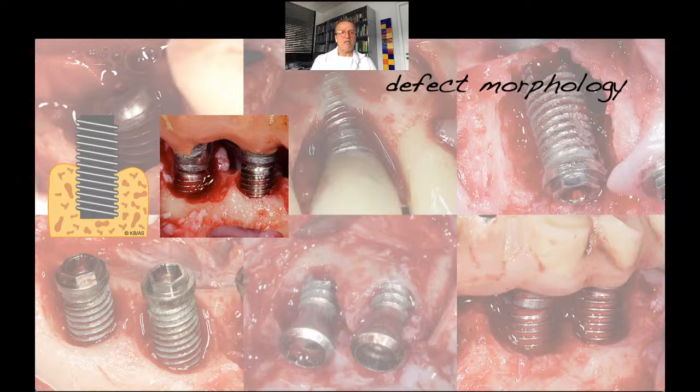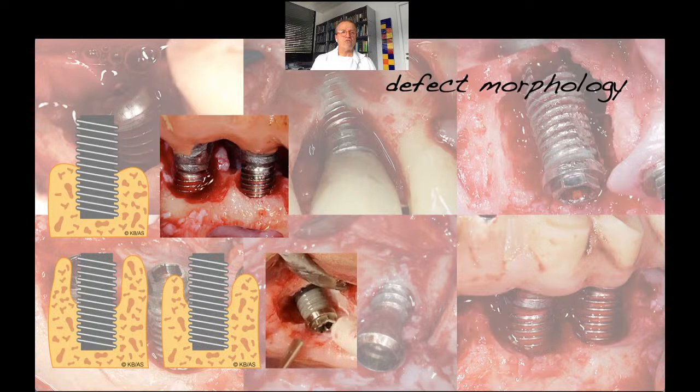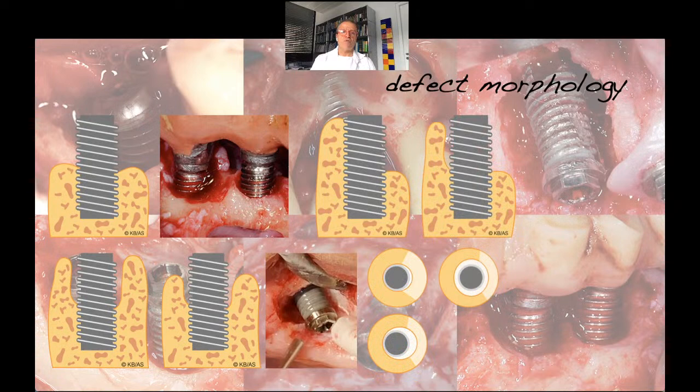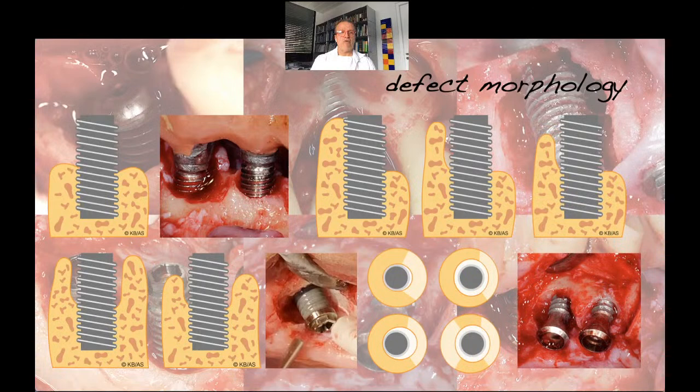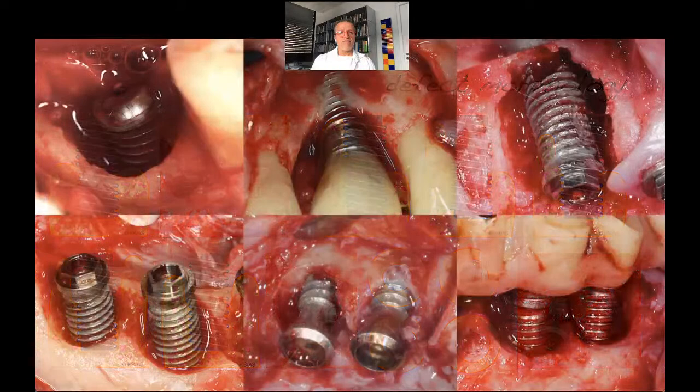We have defects with different configurations — horizontal type defects, purely intrabony or combined with some horizontal bone loss, dehiscences where only the buccal or lingual aspect is missing, and combinations of dehiscence with intrabony and horizontal bone loss. All these have differences in the potential for bone regeneration, but also differences in the potential to access and efficiently clean the implant surface.